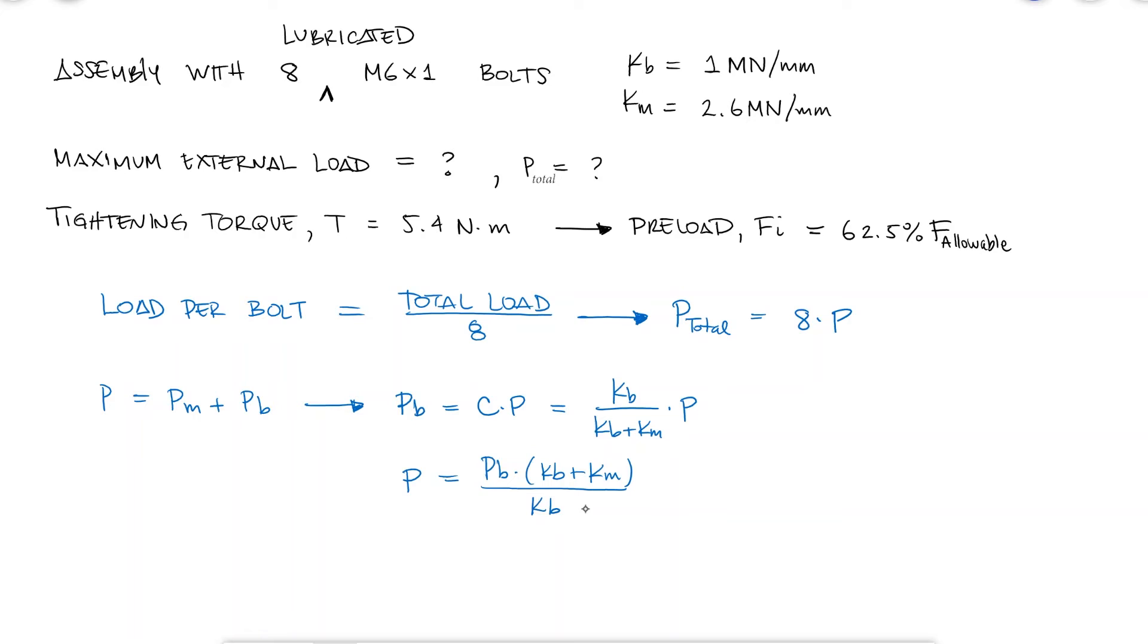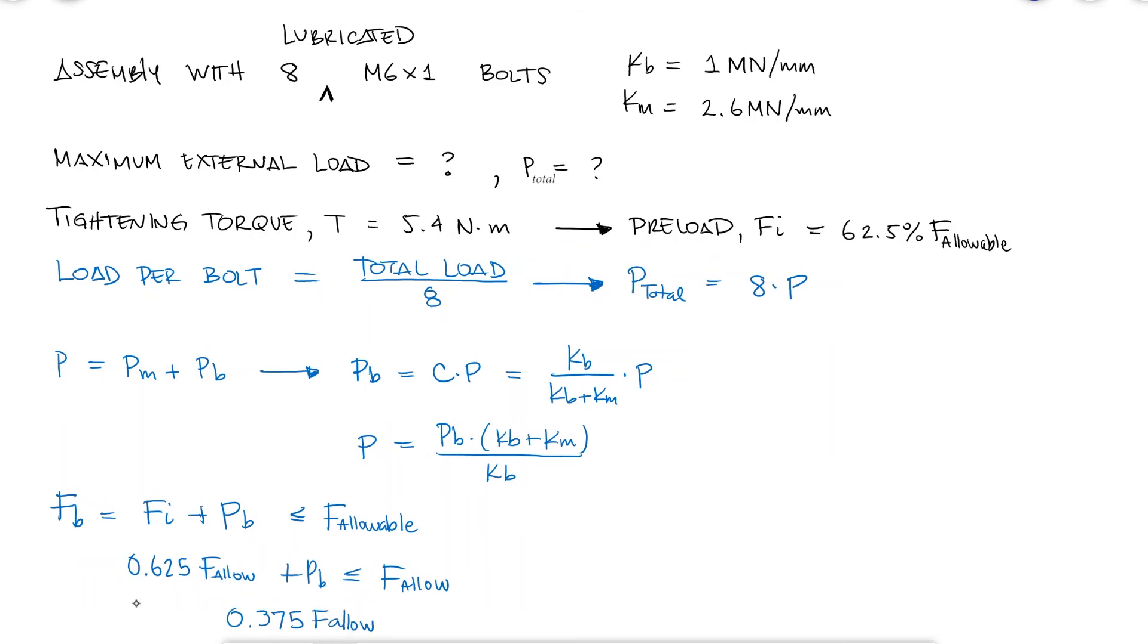Since the preload accounts for 62.5% of the maximum allowable force that goes into one bolt, and we know that the force of the bolt is equal to that preload plus the fraction of the external load that goes into the bolt PB, PB should account for 37.5% of the maximum allowable force.